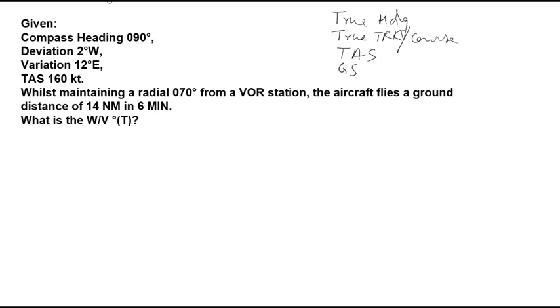Now here, to get true heading, we have to use the data of compass heading, deviation, and variation and use CDMVT to find our true heading.